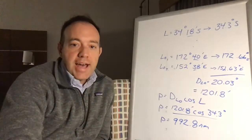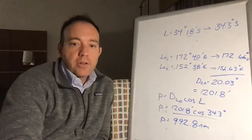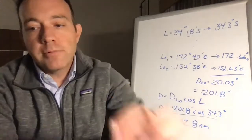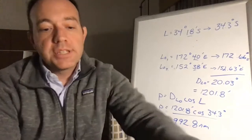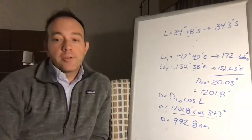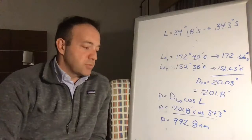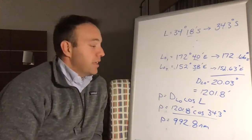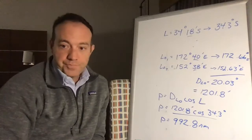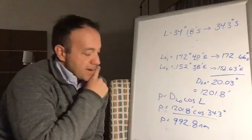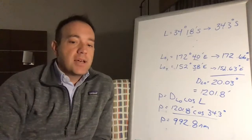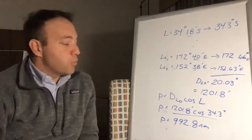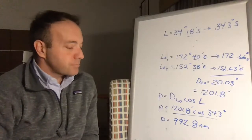So at a latitude of 34.3, the difference in longitude converts to 992.8 nautical miles on the surface of the earth. The Coast Guard problem gives four answers that are all pretty close together — they're testing your precision in calculator data entry. The closest choice is 993 nautical miles; we ended up slightly more accurate at 992.8.